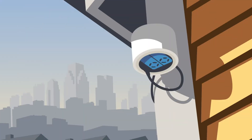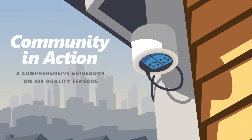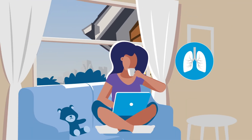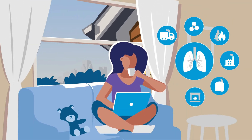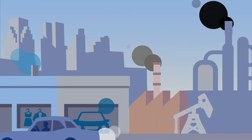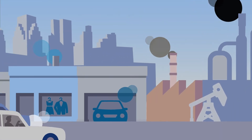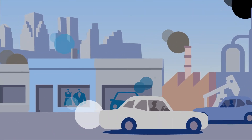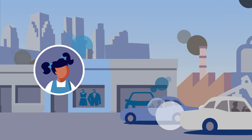You can learn how to monitor air pollution from the guidebook, Community in Action. The first step is to identify the problem that you want to solve. Look around your community for sources of air pollution and the people it might be harming.